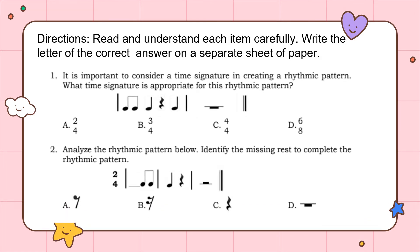Question number 1. It is important to consider a time signature in creating a rhythmic pattern. What time signature is appropriate for this rhythmic pattern? Is it letter A, 2/4 time signature? Letter B, 3/4 time signature? Letter C, 4/4 time signature? Letter D, 6/8 time signature?